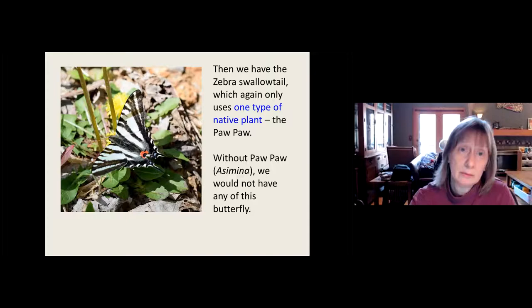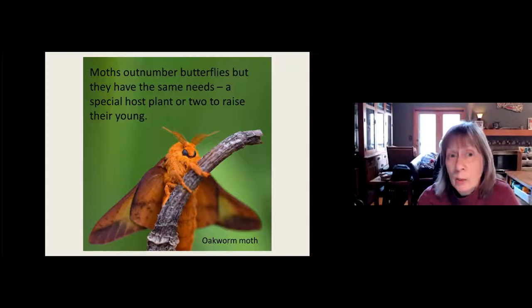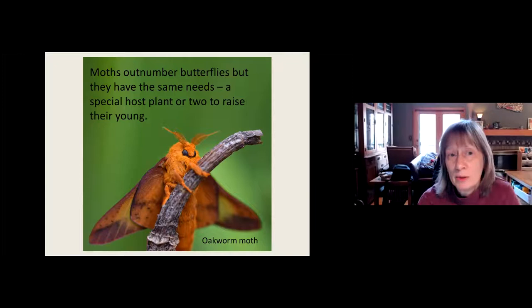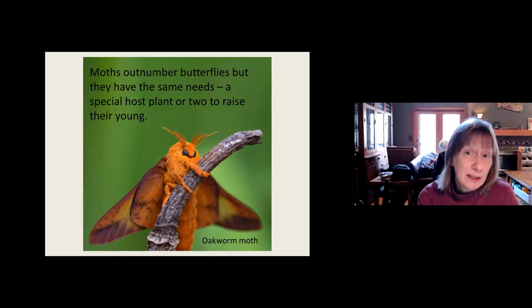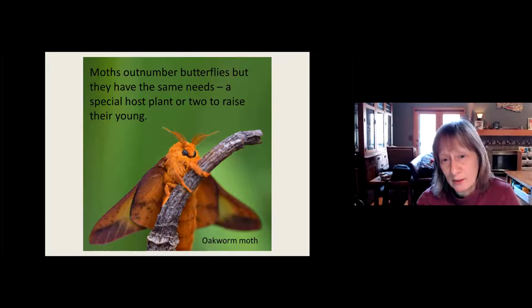Moths outnumber butterflies. In North America we have 800 species of butterflies, but when it comes to moths, we have 11,000 species. But they have the same needs as butterflies — they're going to look for a special host plant or two to raise their young. The oak worm moth, for example: they're the ones with the black and white striped caterpillars usually in August and September on our oak trees.